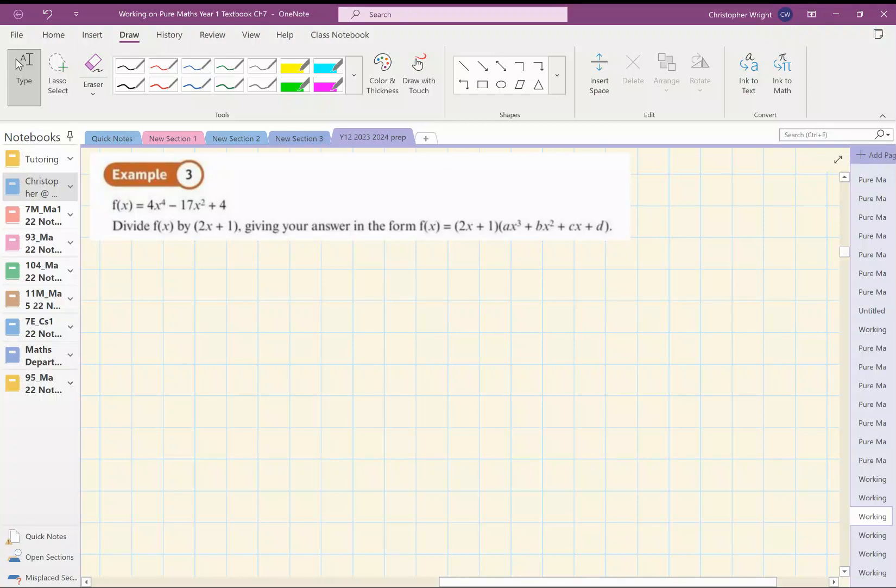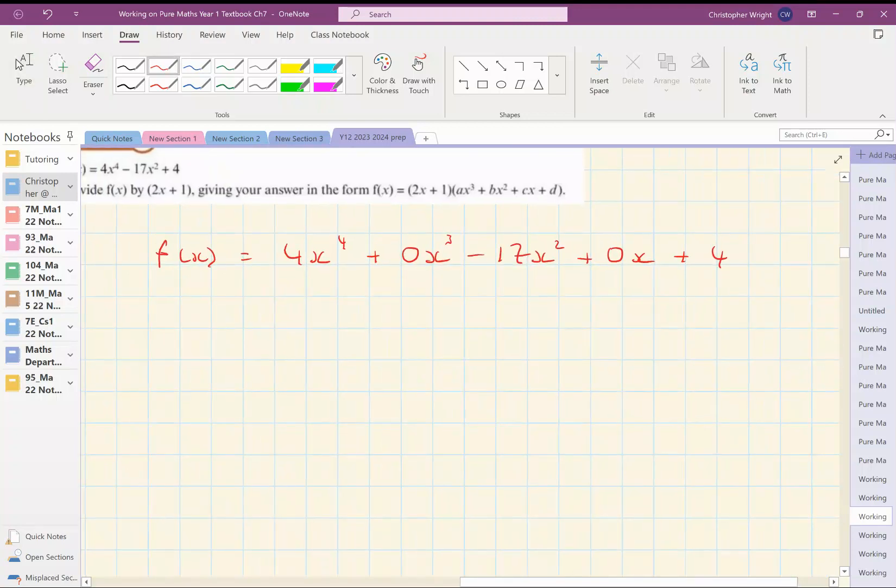OK, I'm going to do example 3 by inspection now. I've got my polynomial, which is 4x⁴ + 0x³ - 17x² + 0x + 4, and I need to write it in the form